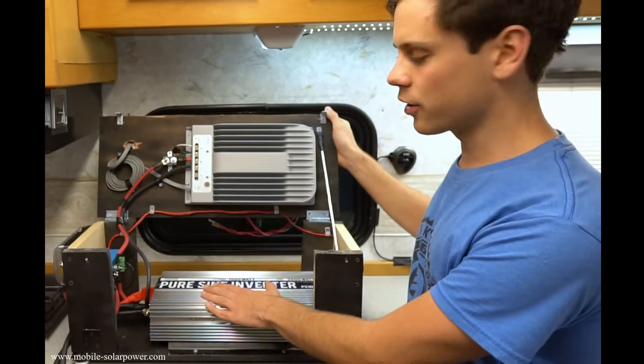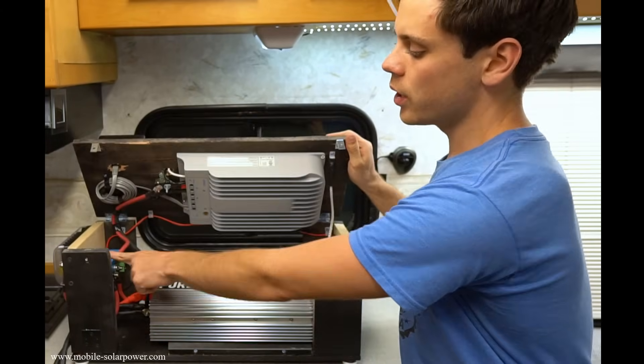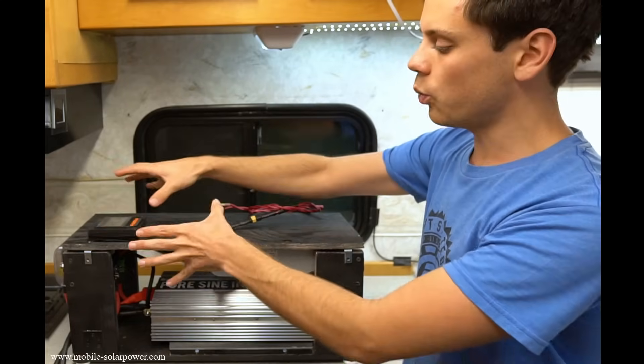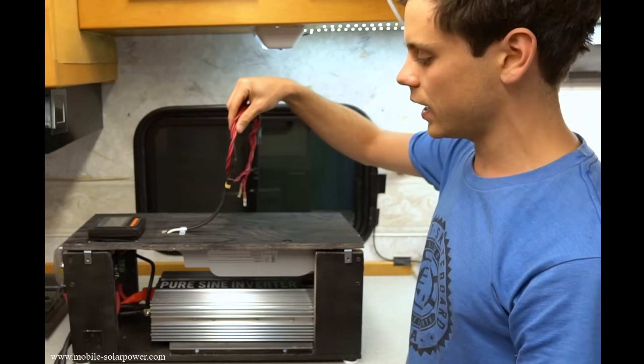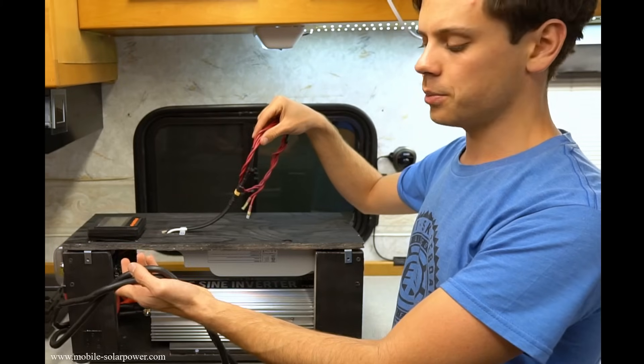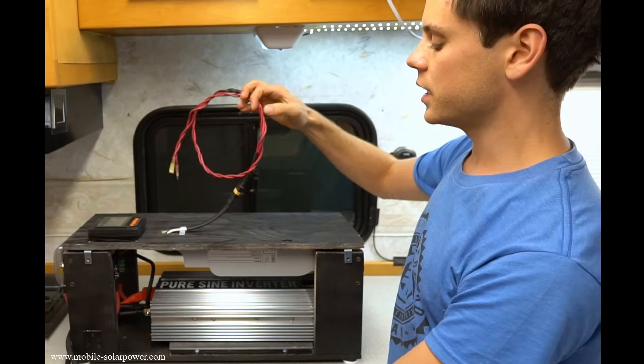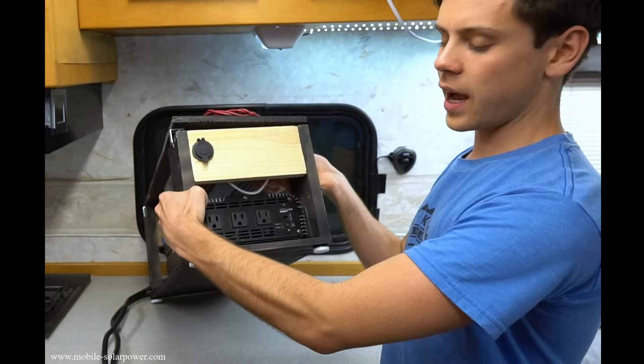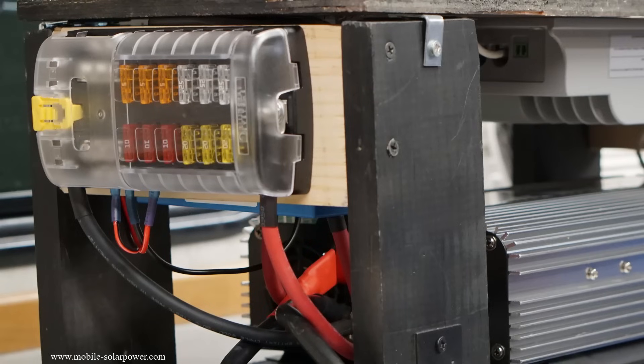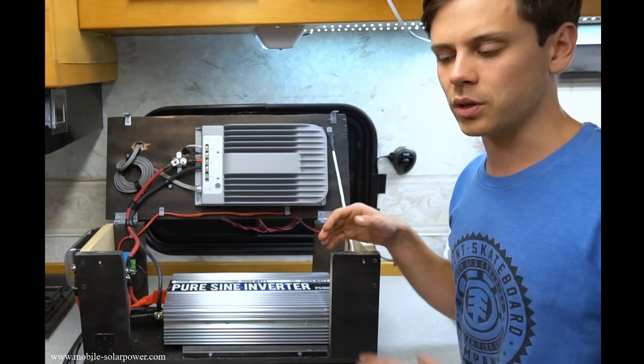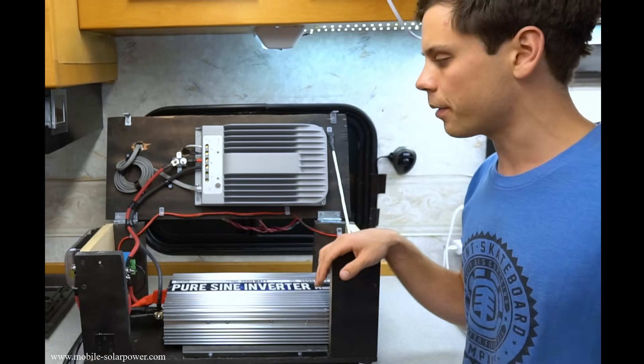With this system we have an inverter and a solar charge controller, a low voltage disconnect and a fuse box. On the top we have an MT50 to tell what's going on, then we have solar panel input wires and battery cables. Having it in a box like this makes it very easy to expand or scale or swap out parts if they break.